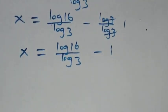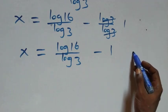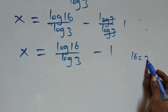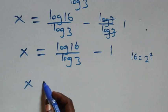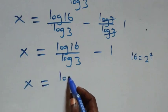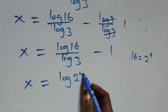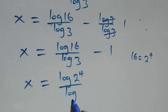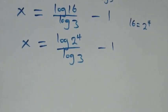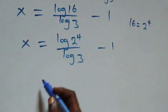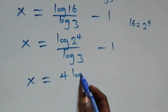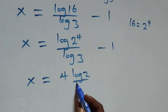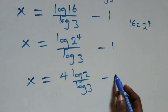Next, sixteen can be written as 2 × 2 × 2 × 2, which is 2 raised to the power four. What we have becomes x equals log of 2 raised to power four, over log three, minus one. Applying the power rule of logarithms, the four comes down, giving x equals four log two over log three minus one.